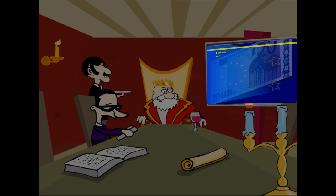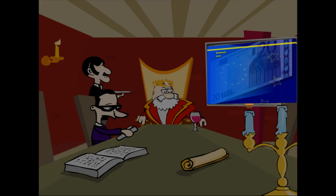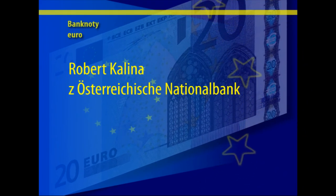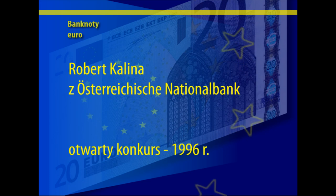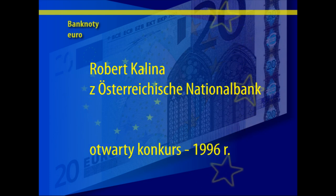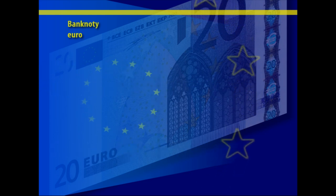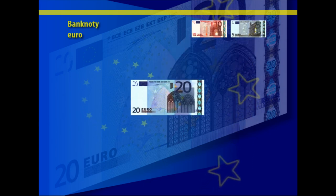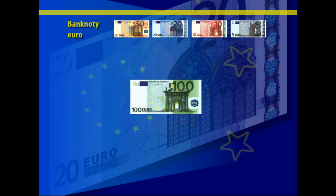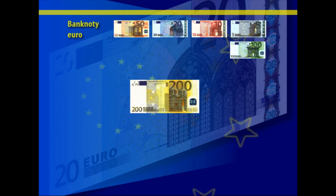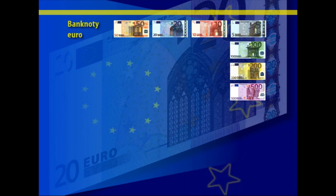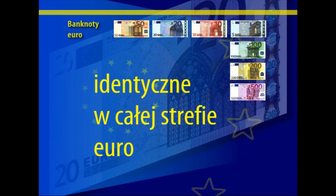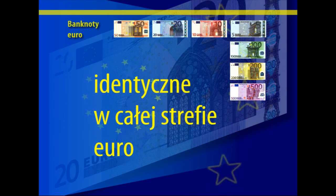Banknoty euro zostały zaprojektowane przez Roberta Kalinę z Banku Centralnego Austrii, który swoim projektem wygrał w 1996 roku otwarty konkurs. Seria banknotów euro obejmuje 7 nominałów: 5, 10, 20, 50, 100, 200 i 500 euro. Banknoty euro są wspólne dla wszystkich państw strefy euro, są w każdym z nich takie same.